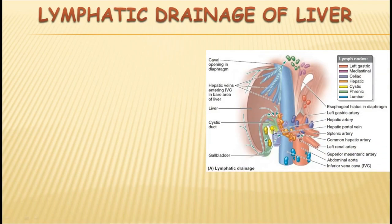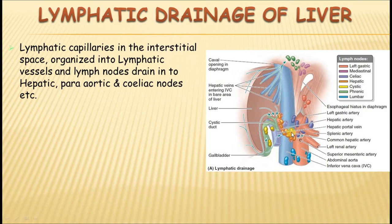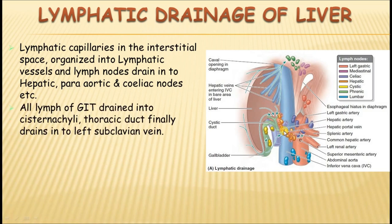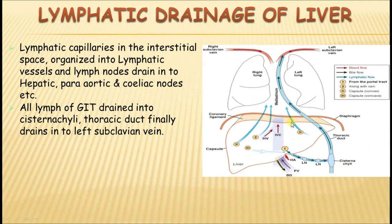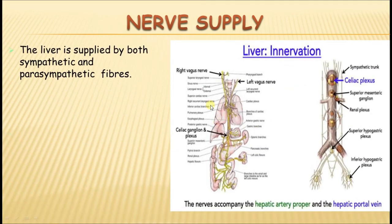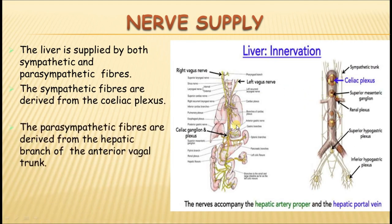Lymphatics: hepatic nodes drain mainly into celiac and para-aortic nodes, and ultimately through the thoracic duct into the venous system at the junction of the subclavian vein and internal jugular vein. Some lymphatics pierce through the diaphragm and drain to the mediastinal nodes. Nerve supply: sympathetic is from the celiac plexus, and parasympathetic is from the anterior vagal trunk.